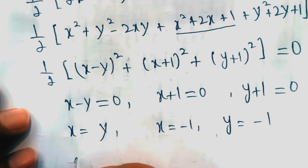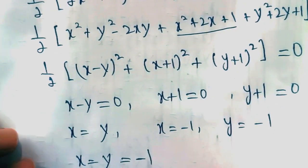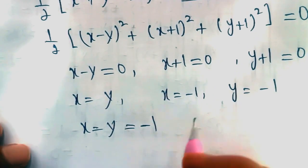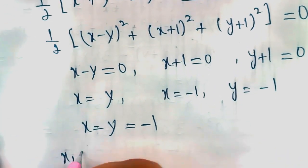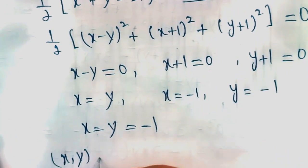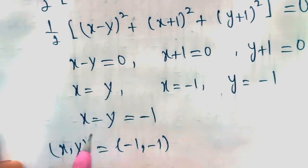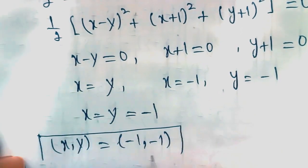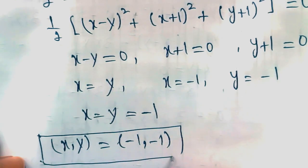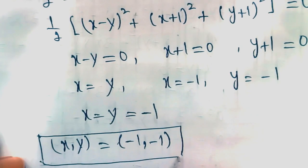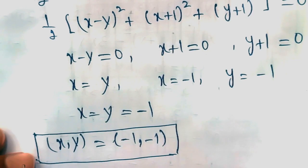So x = y and x = -1, y = -1, meaning x = y = -1. The solution is (x, y) = (-1, -1). Thanks for watching this video — don't forget to like, comment, and share. We'll see you in the next video. Till then, take care and bye bye.